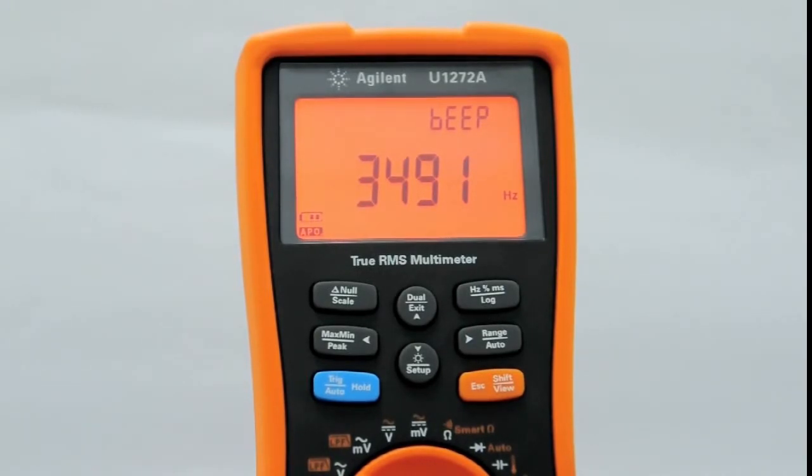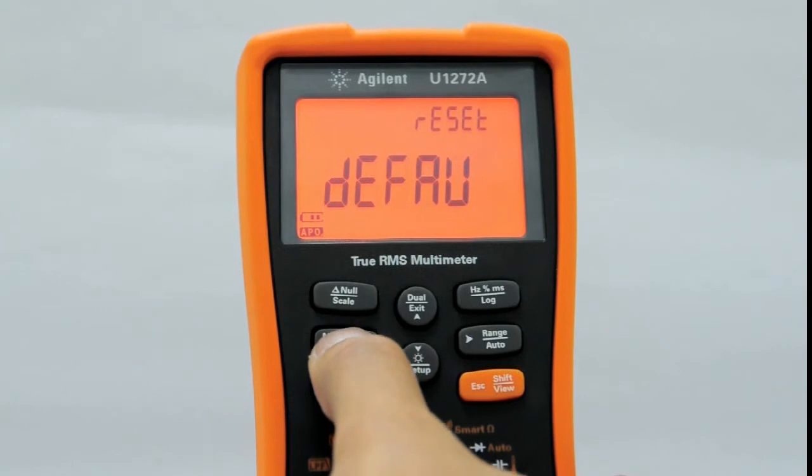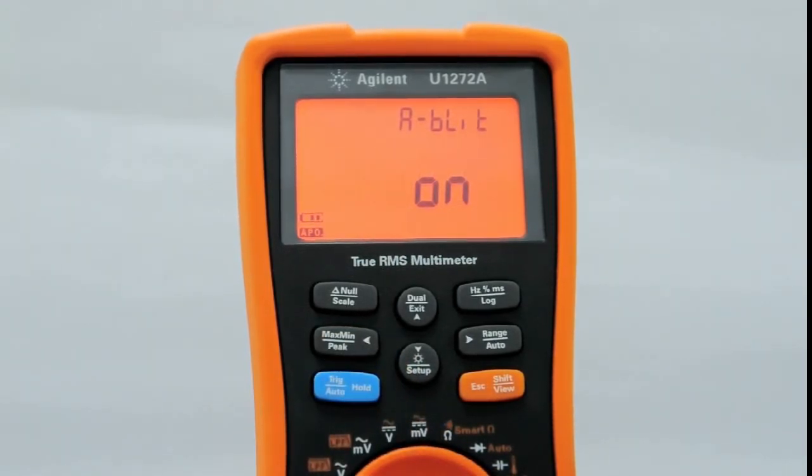To access this function, scroll through the setup menu until AB lit is displayed on the secondary display. Press arrow up or down to turn it on or off.